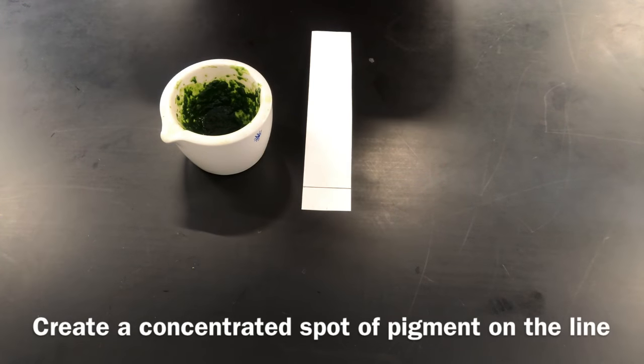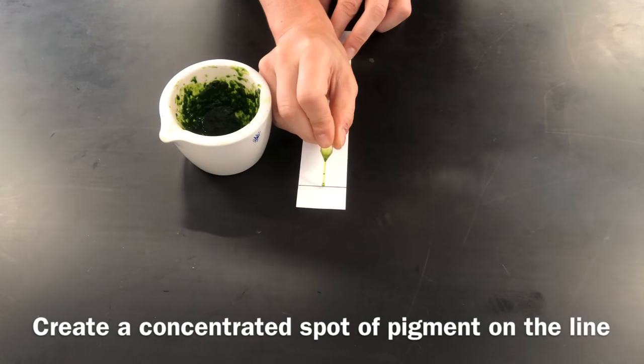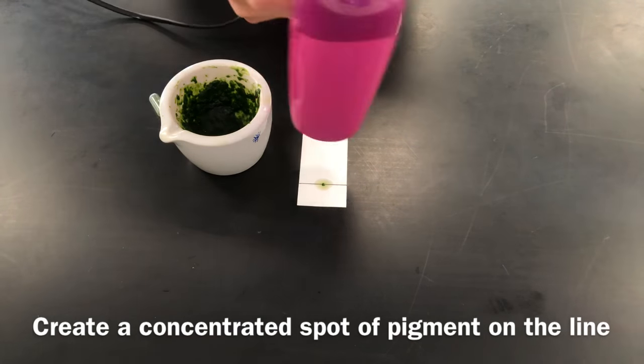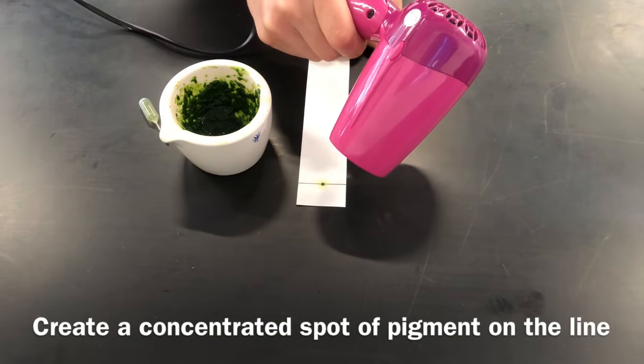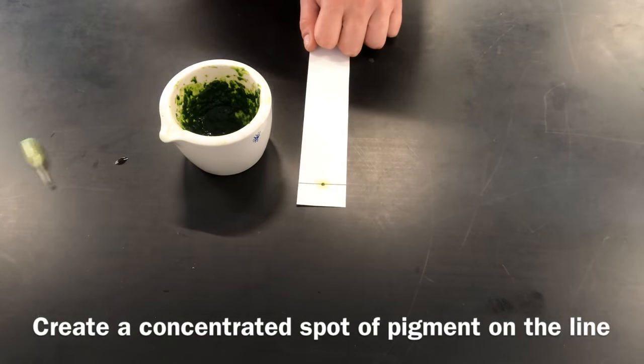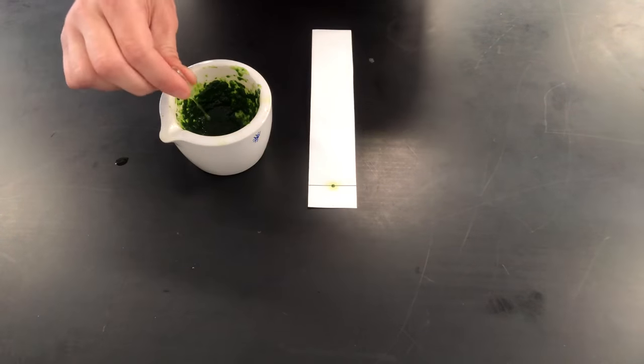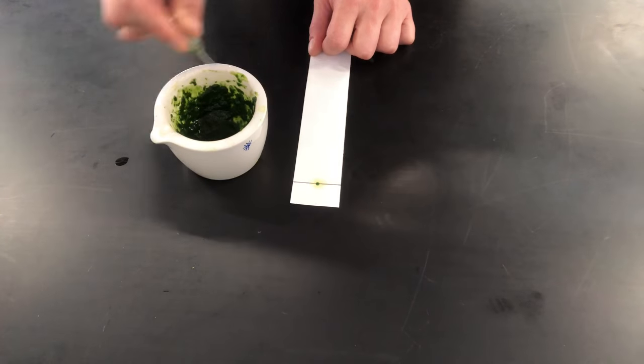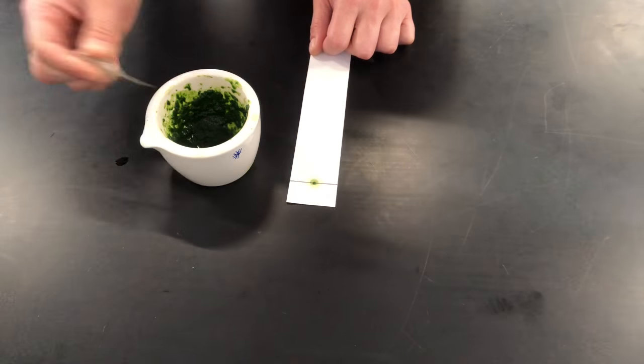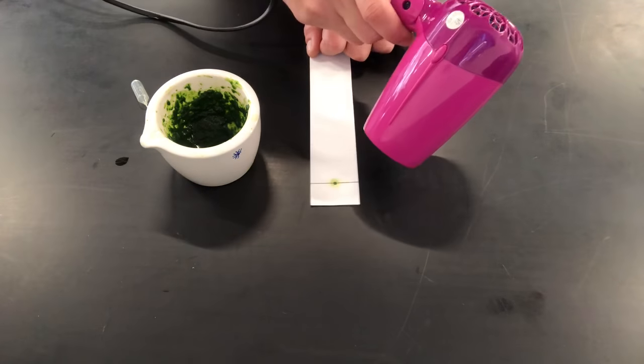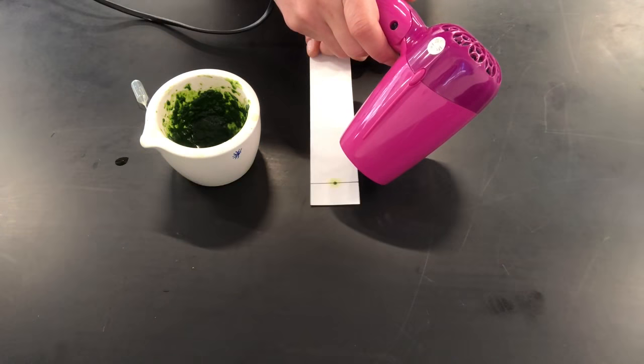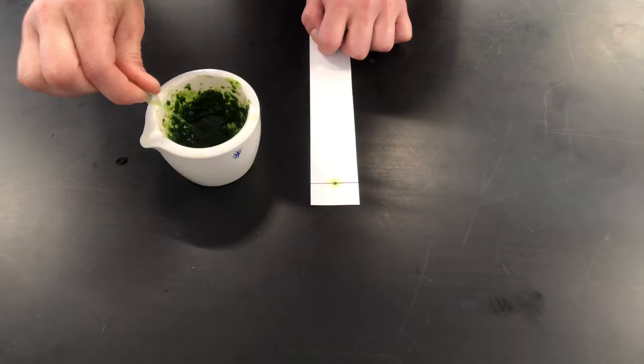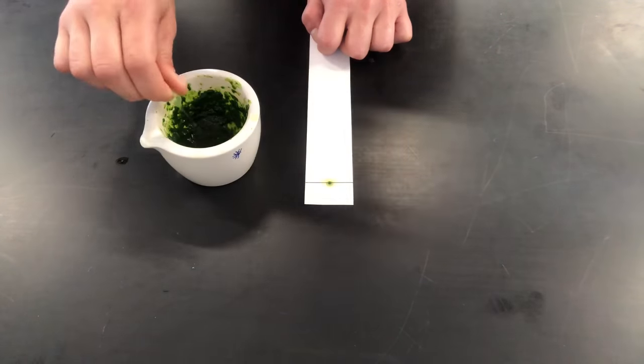At this point, you're going to place a spot of concentrated pigment on the line. This can be done in several different ways. Here, I'm using a very small, narrow plastic pipette. It can also be done with a capillary tube, and sometimes people do it with a very fine paintbrush. But the most important part is to make that spot as concentrated as possible. So in between spotting, you can dry it with a hairdryer to make it more concentrated, and then spot on top. And you're going to keep doing this until you have a very dark green concentrated spot of pigment on your line.